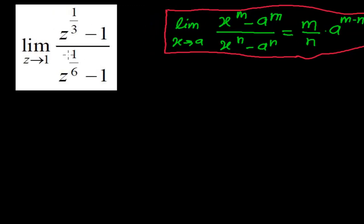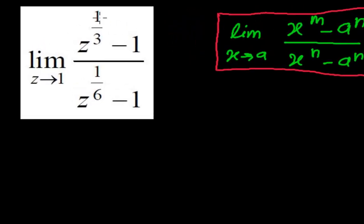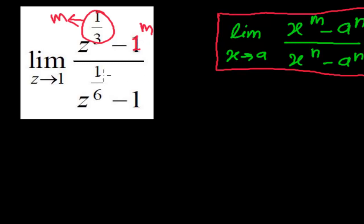Since this expression is in the same form: z is the variable here whose power is 1/3, so 1/3 will work as m, and 1 can be made any power so 1 will also be the power. Here, 1/6 will work as n, and similarly 1 can be made to any power, so that's n.